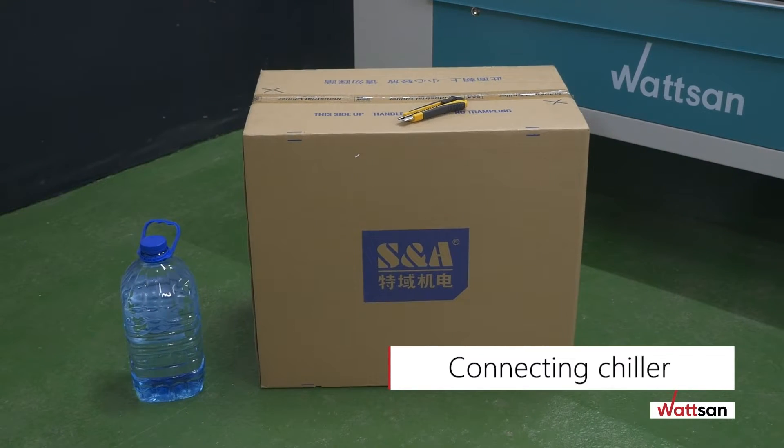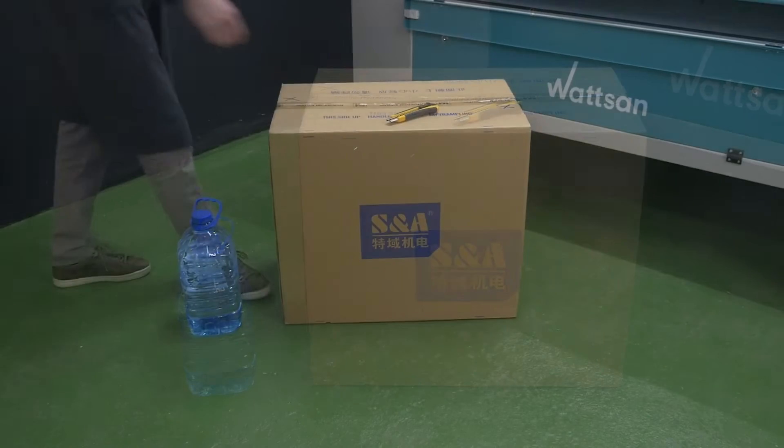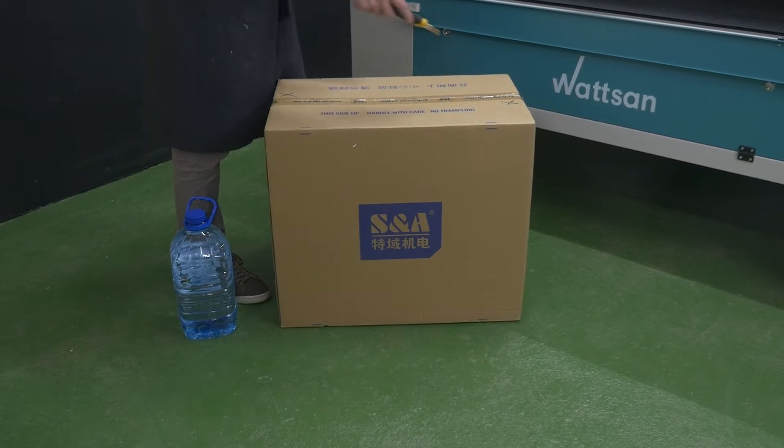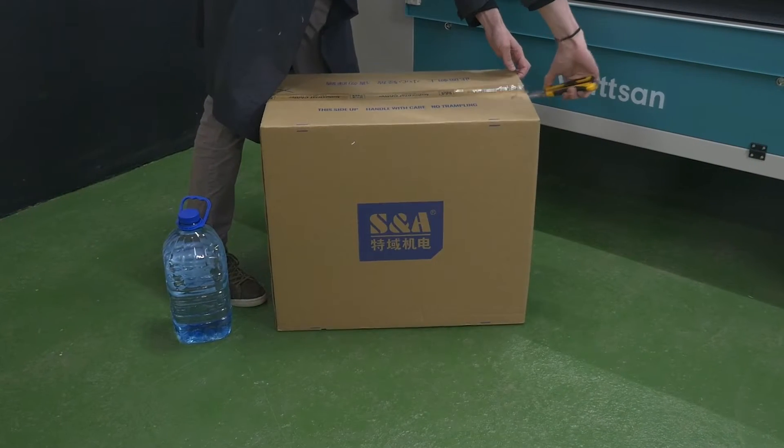Place the box with the chiller next to the machine. To ready the chiller you will need a box cutter and distilled water. Open the box with the chiller.